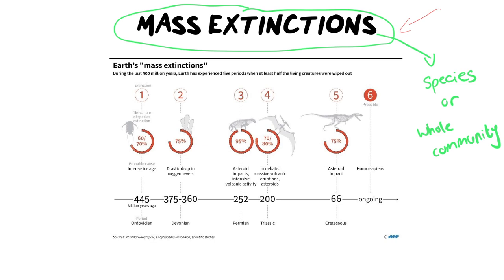When it comes to studying this section, it's important to note when those mass extinctions occurred. We have the Ordovician, the Devonian, Permian, Triassic, and Cretaceous. You will most likely need to know the names of these specific mass extinctions, but you don't need to remember all of these percentages off by heart, because a lot of teachers will include an infograph and ask questions about it. What you actually need to know is the name and what potentially caused that mass extinction.